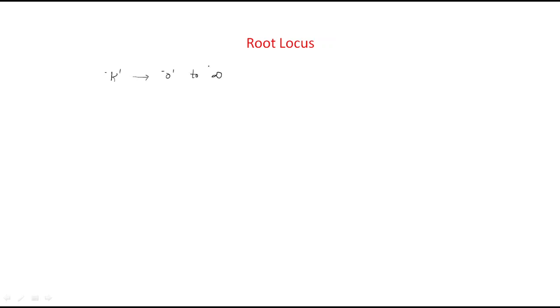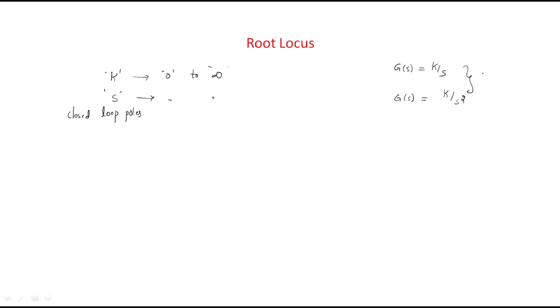Hello everyone. Last class we discussed about root locus, and in this class we will also discuss the extension of root locus. Root locus simply shows how the closed-loop poles vary when gain varies from 0 to infinite. Two examples were covered: G(s) = k/s and G(s) = k/s².